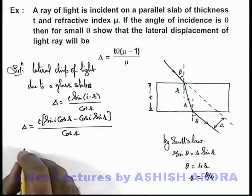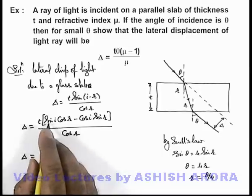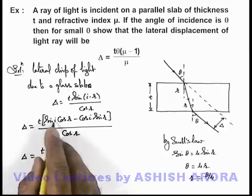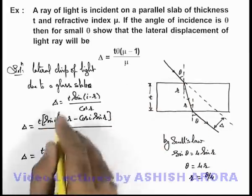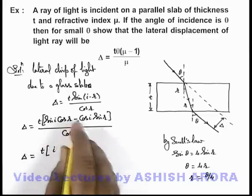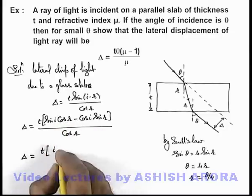Here if we substitute the values, then we can see thickness is t, sin i is θ, cos r we can write as 1 because cosine of a negligible value is unity, minus cos i can be written as 1 because i is again very small.